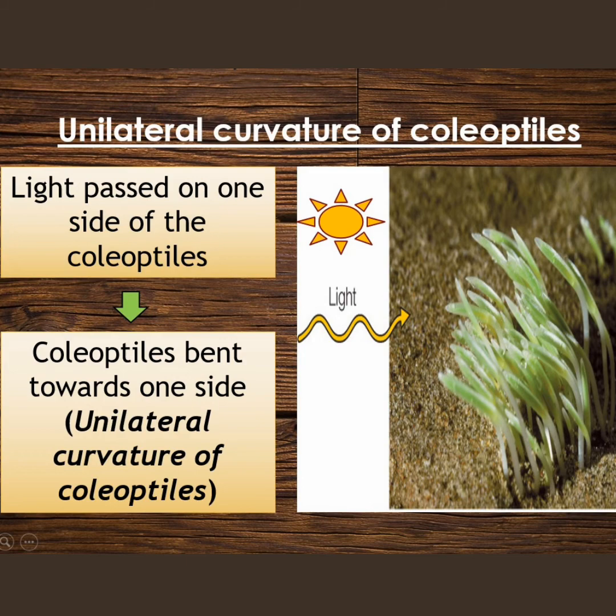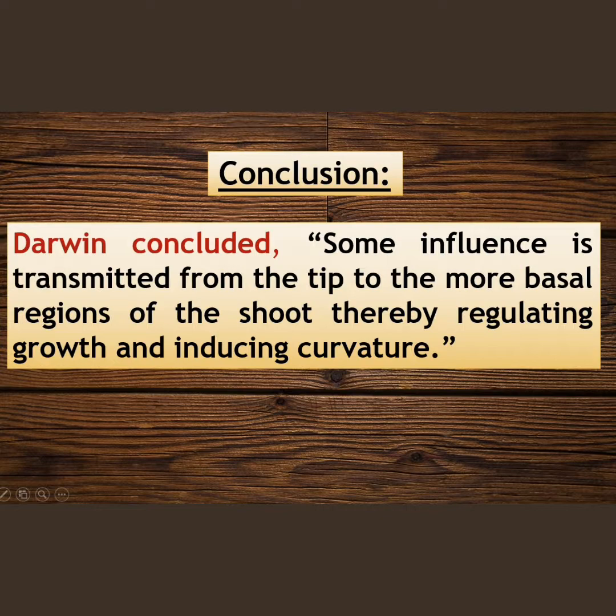When light was passed on one side of the coleoptile, the coleoptile bent towards that side — this is called unilateral curvature. Darwin concluded that some influence is transmitted from the tip to the more basal regions of the shoot, thereby regulating growth and inducing curvature.